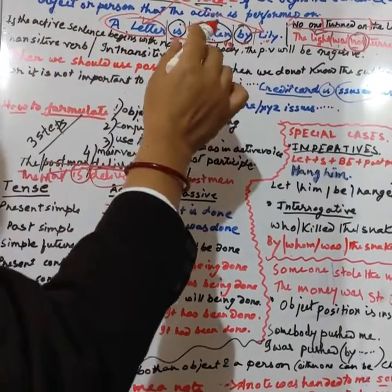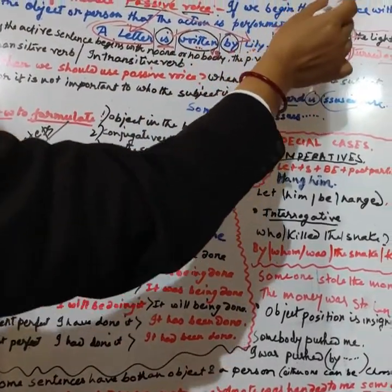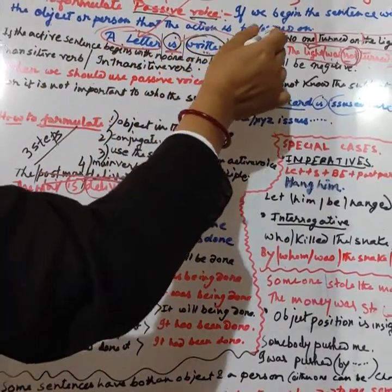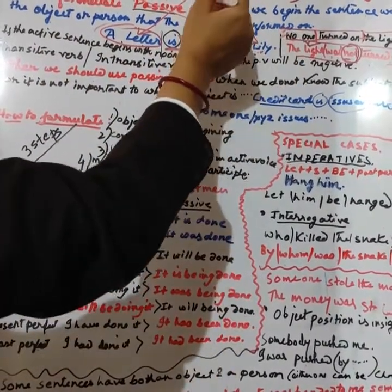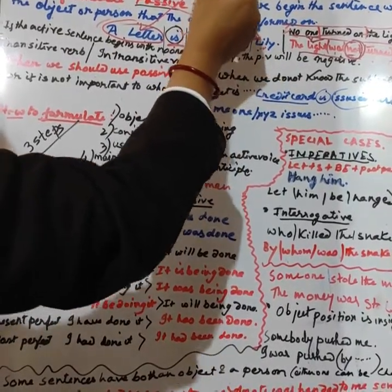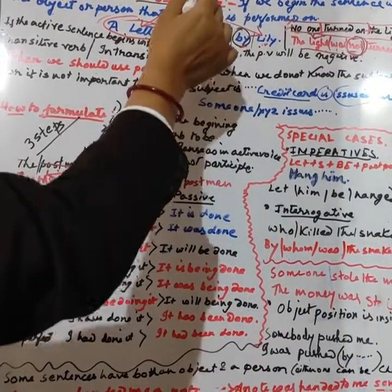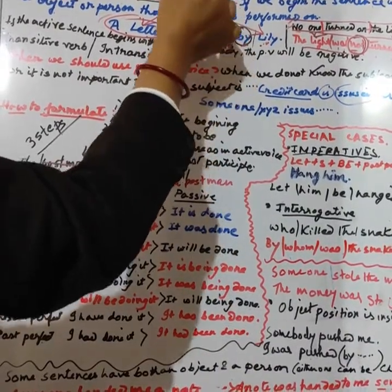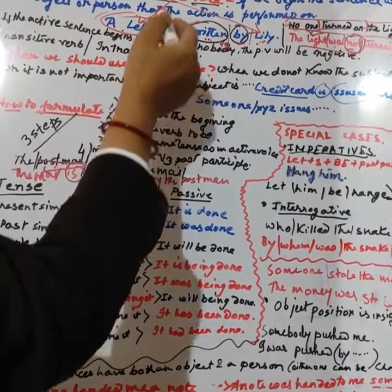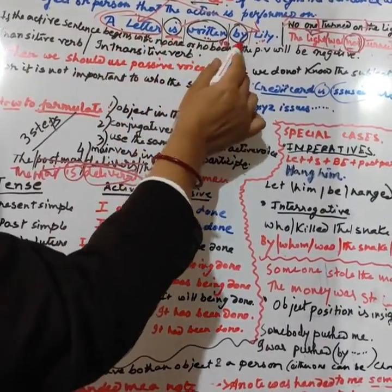Now how to formulate passive voice: we begin the sentence with the object, the person or thing the action is performed on. Here, which is the object? That is 'the letter.' A letter is singular, so the passive form will be: 'A letter is written by Lily.'